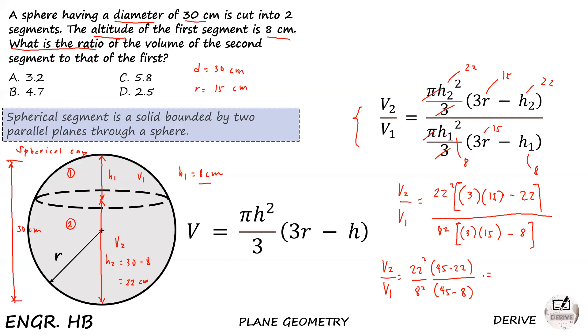So the answer is, get your calculator guys, 22 squared times 45 minus 22, that was 23. 8 squared times 45 minus 8, that was 8 squared times 37. So the answer is 4.701. So the ratio of the two segments is 4.701.